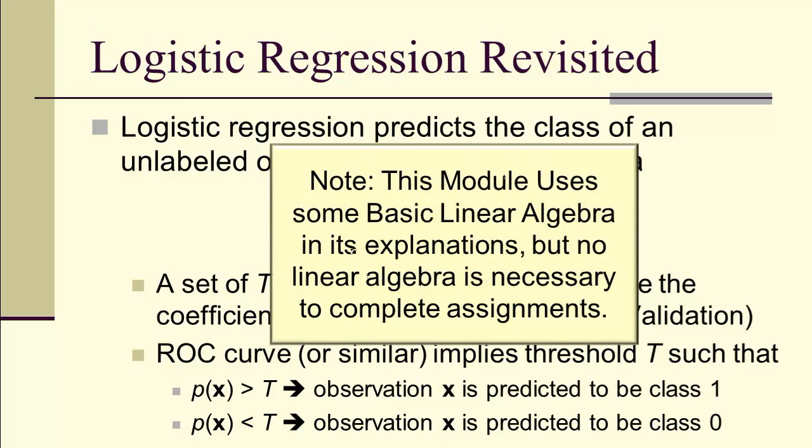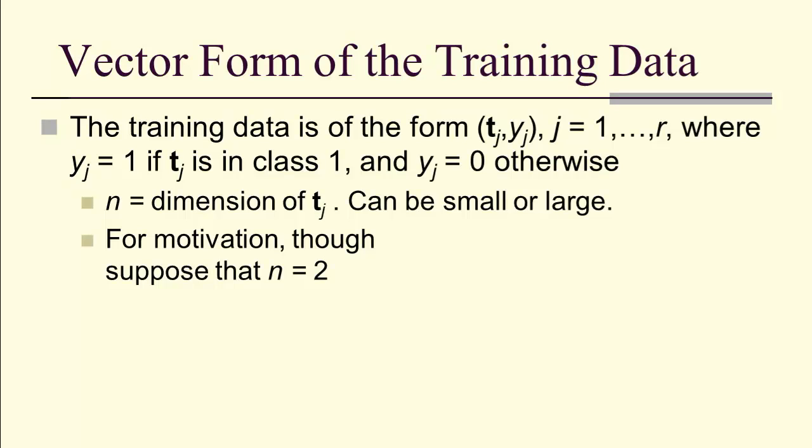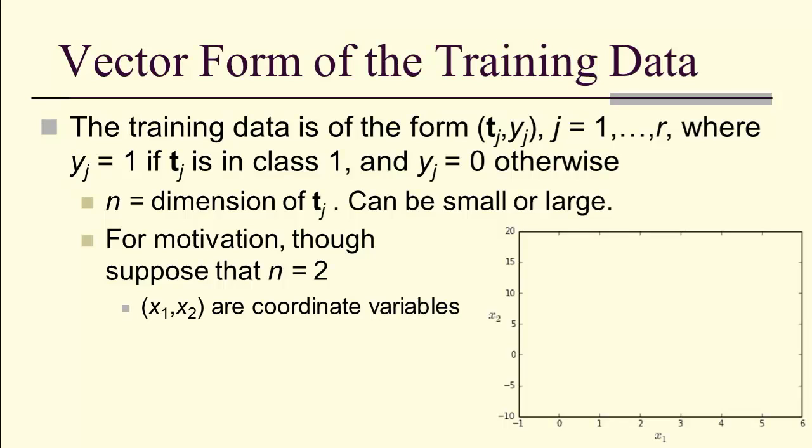Notice we're using bold x, and in general we're going to use some basic linear algebra, although you won't need any linear algebra to complete the assignments. The training data we can think of as a pattern. T_j is a vector, a list of different features, and y_j determining whether it's class 1 or class 0. n is the dimension of T_j, the number of features used to describe a pattern. For right now, we're just going to suppose n equals 2, looking at x1 and x2, which are coordinate variables.